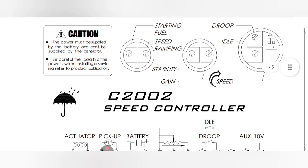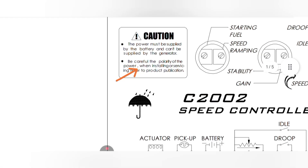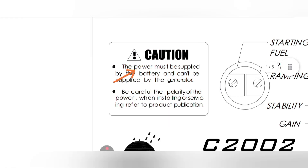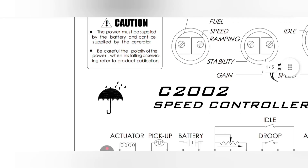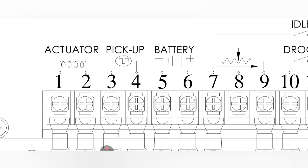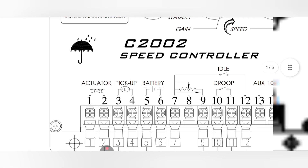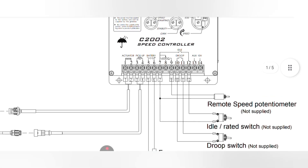Important caution: power must be supplied from the battery only — it cannot be supplied from the generator's charging alternator. Connect battery pins five and six directly from your battery. Be careful to observe polarity when servicing: connect negative to negative and positive to positive, because this is a DC system. Incorrect polarity will blow the controller.